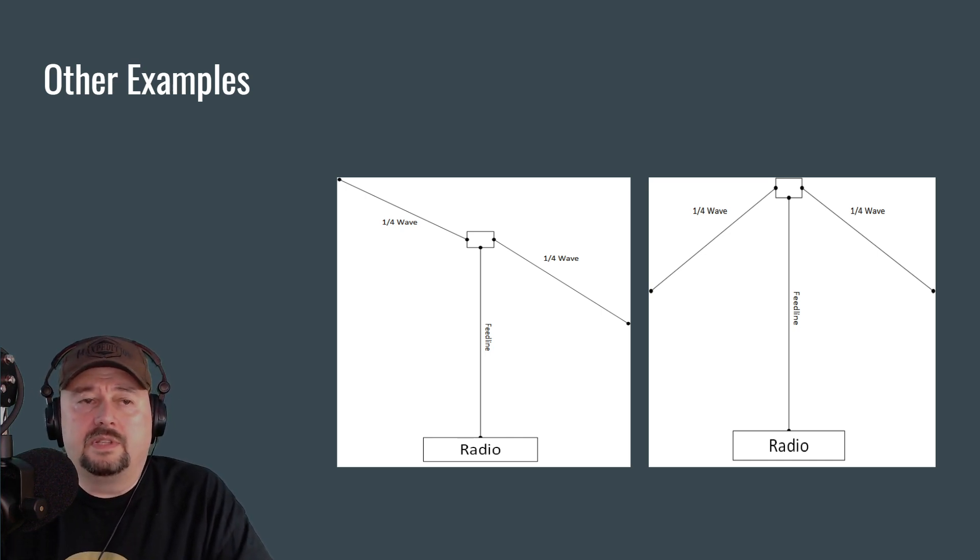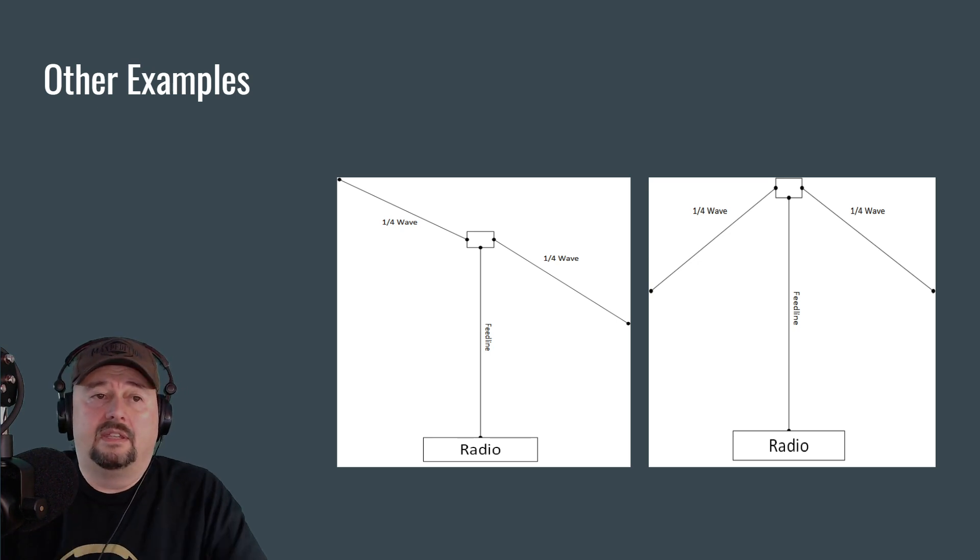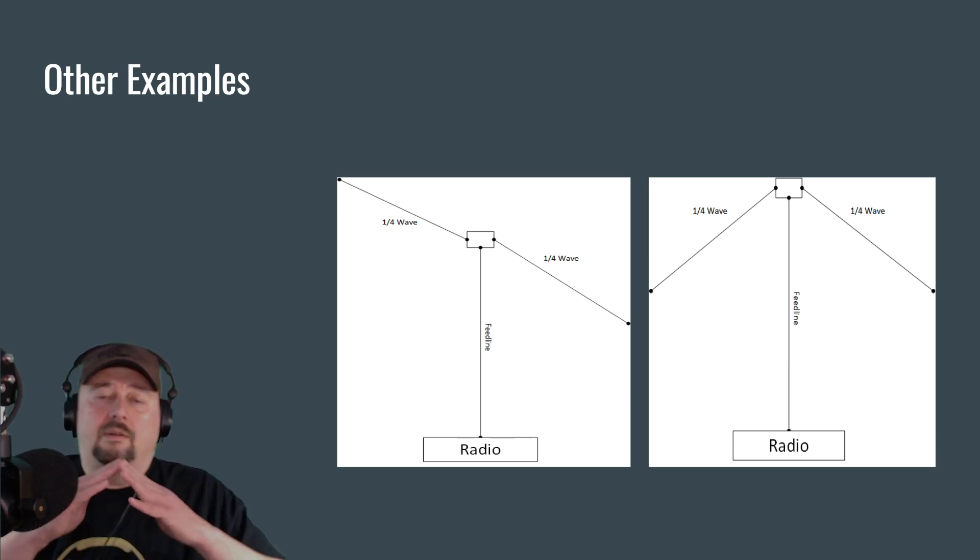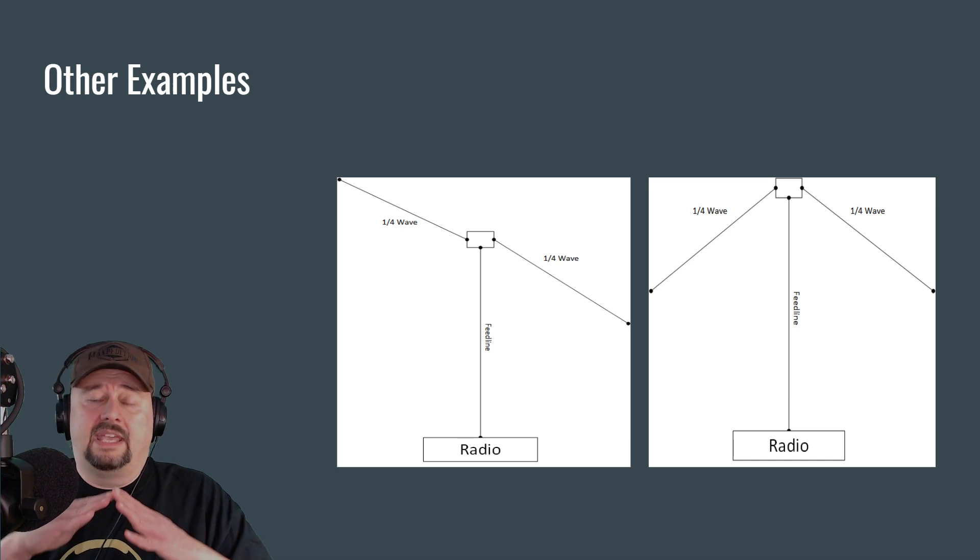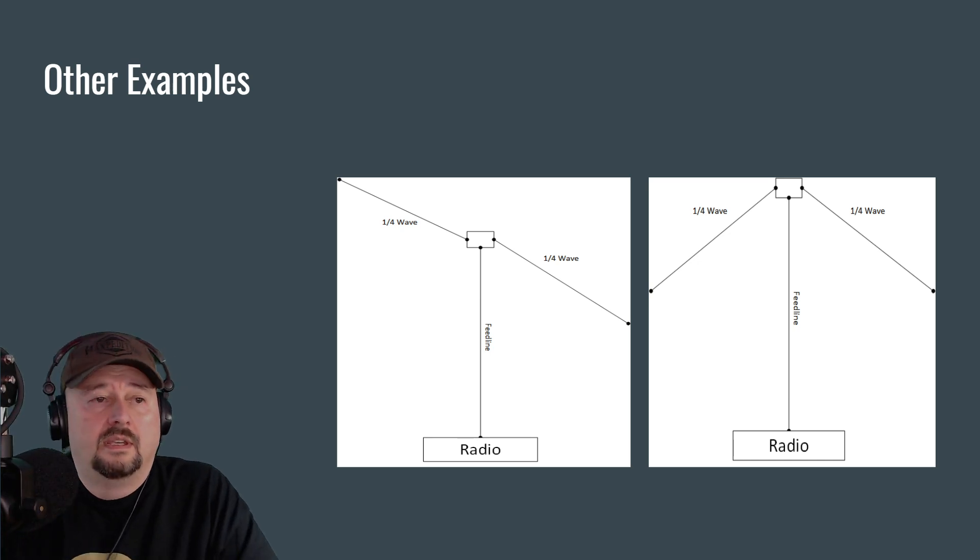In the inverted V, you can see that it's just an upside down V. Now, depending upon how much you adjust that angle, you can adjust your antenna impedance. So on dipole antennas, we target a 50 ohm impedance. That impedance can be adjusted by the angle of that V. We want to have 50 ohm impedance because that's what our radio expects. If you have a mismatch on impedance, then you start to have problems with SWR or standing wave ratio.